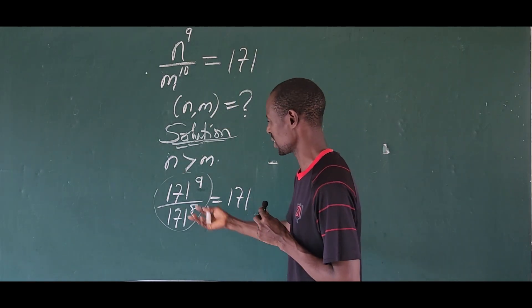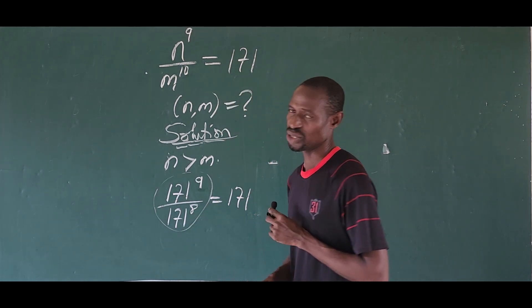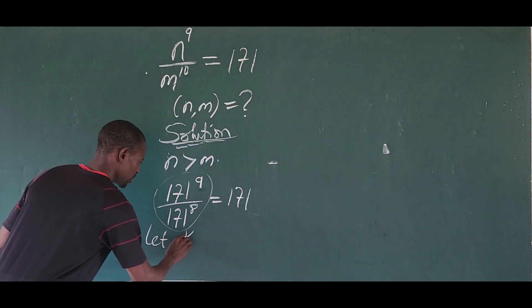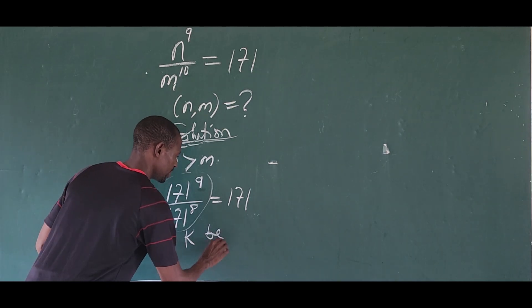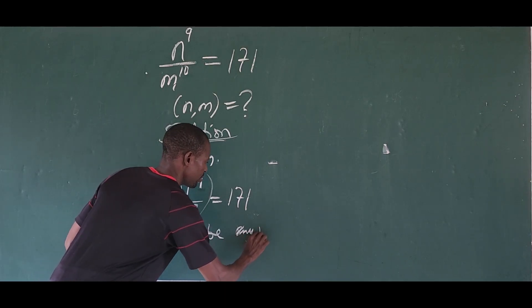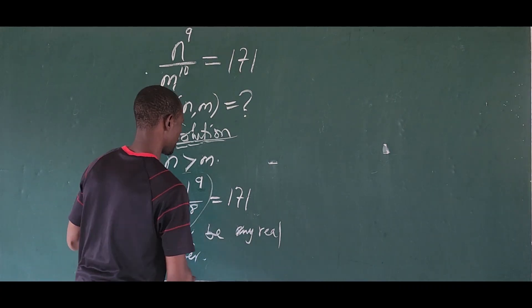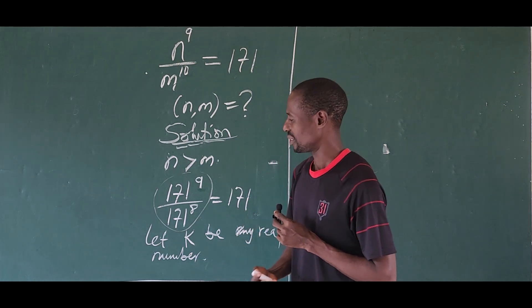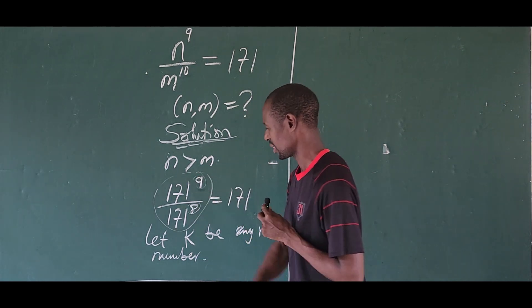So how do we express this to give us 171? In this regard, let K be any real number. So if we have K as any real number, let's try to bring out K and raise it to the appropriate powers, because the mismatch between power 9 and power 10 is the challenge here.